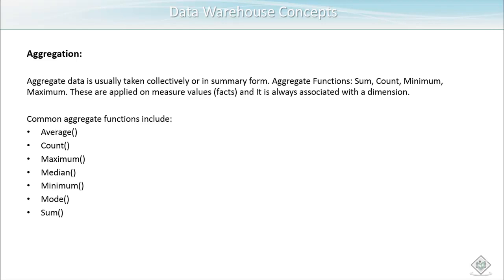Aggregation plays a very important role in the data warehouse. For example, if I have one table which holds the values for a year, we have 365 records for that particular year. Now if somebody wants to see the complete sales for that year, it will perform the summation of all the major values — like the revenue — for the complete year.